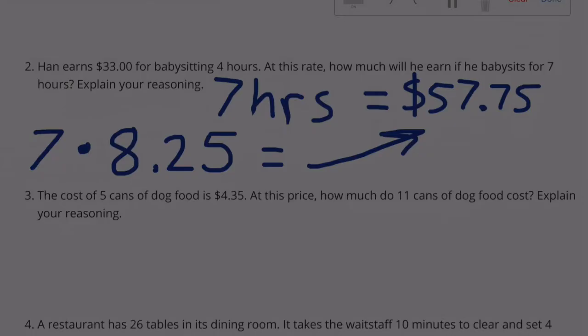Number 3: The cost of 5 cans of dog food is $4.35. At this price, how much do 11 cans of dog food cost? Explain your reasoning.